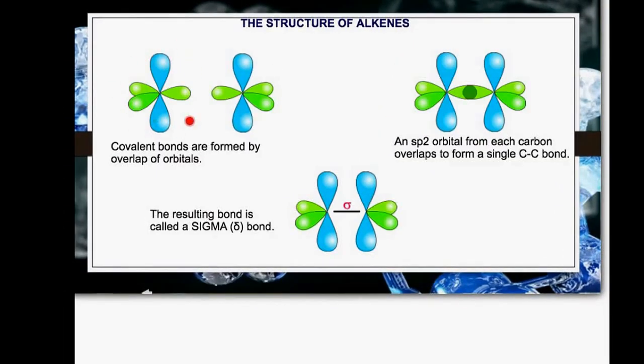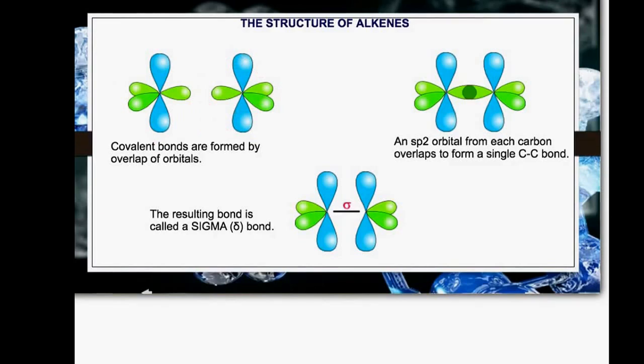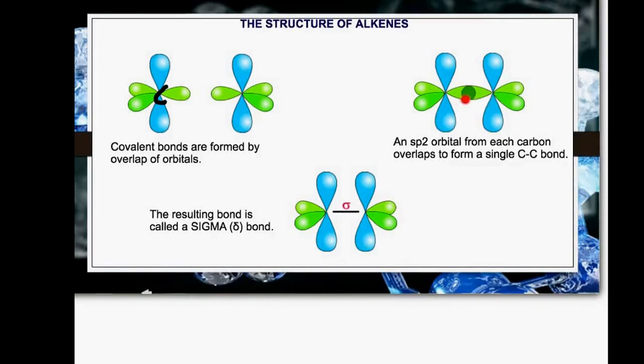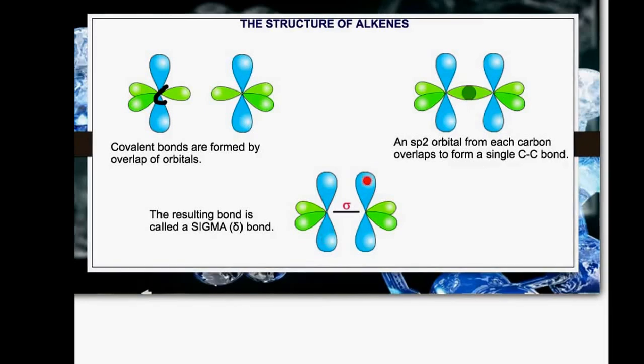These diagrams show two carbons that are going to bond together to form an alkene. We've got the central carbons, the three orbitals around them at 120 degrees, and then at 90 degrees we've got this P orbital. These two green ones overlap and form our sigma bond here. The two P orbitals overlap and form a pi bond.